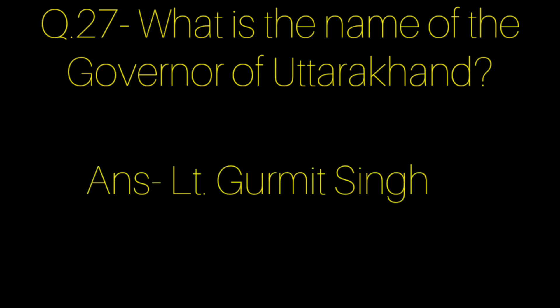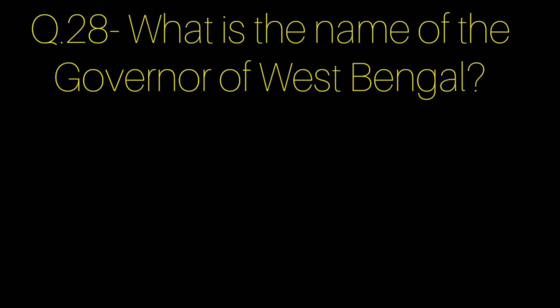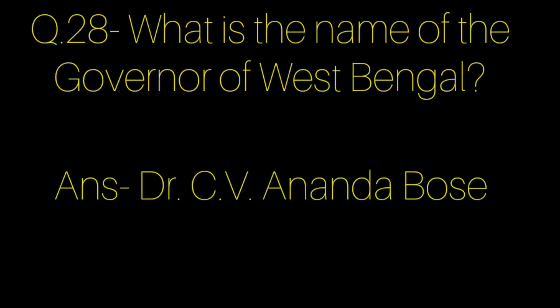Question number 27: What is the name of the governor of Uttarakhand? Answer: Shrimati Anandiben Patel. Question number 28: What is the name of the governor of West Bengal? Answer: Shrimati Anandiben Patel.